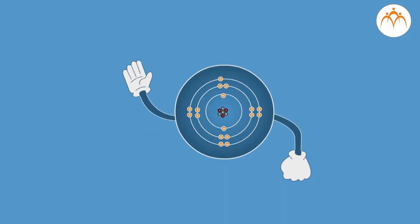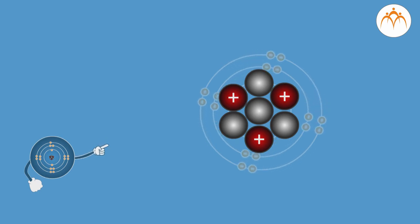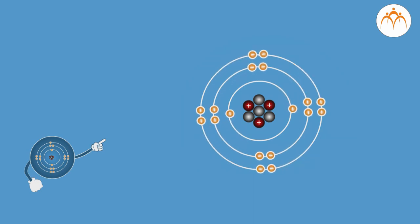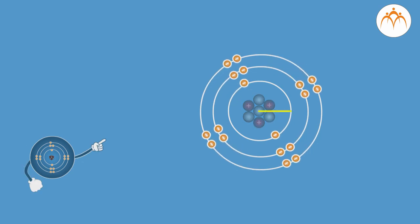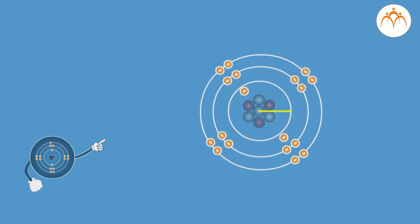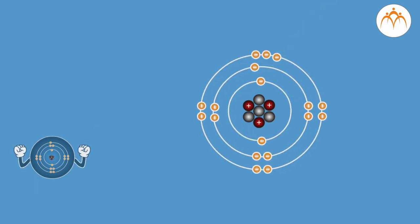Modern structure of atom. At the centre is the massive nucleus which contains positively charged protons and neutrons having no charge. Protons and neutrons together are called nucleons. The entire mass of the atom is concentrated at the centre, and most of the space inside the atom is empty. The atomic radius is almost one lakh times larger than the nucleus.